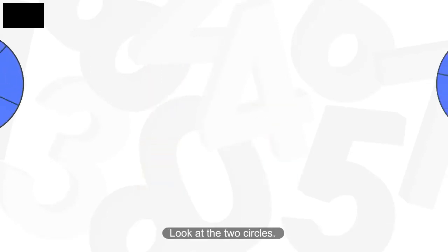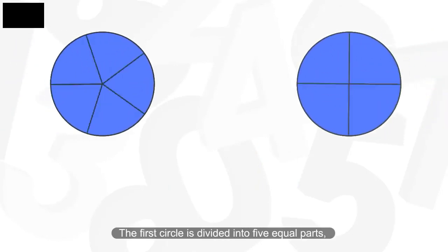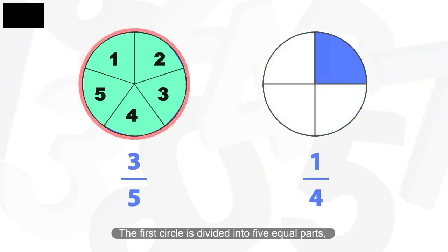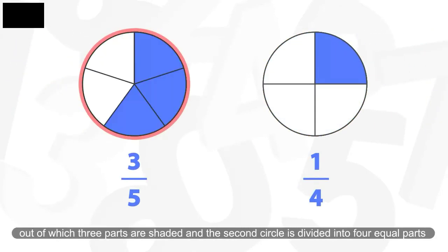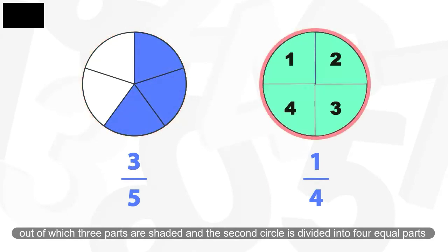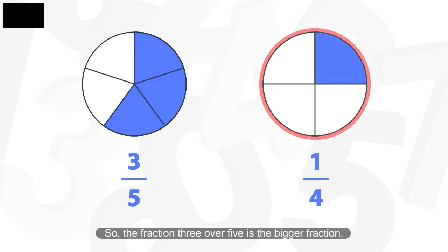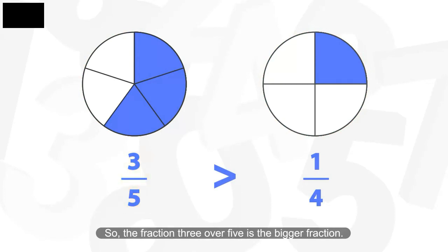Look at the two circles. The first circle is divided into 5 equal parts, out of which 3 parts are shaded, and the second circle is divided into 4 equal parts, out of which 1 part is shaded. So the fraction 3 over 5 is the bigger fraction.